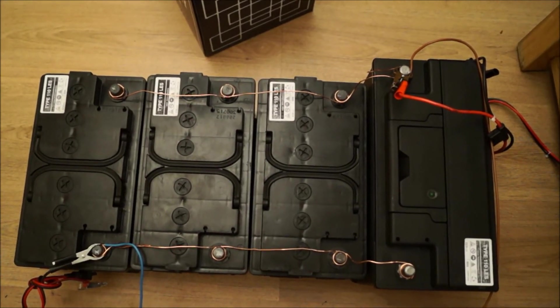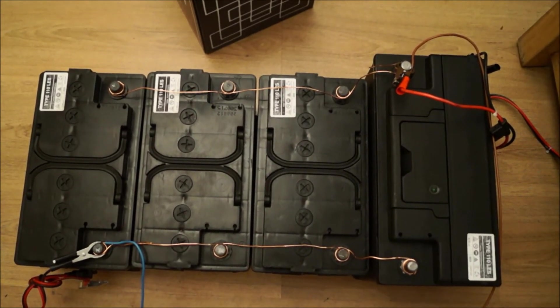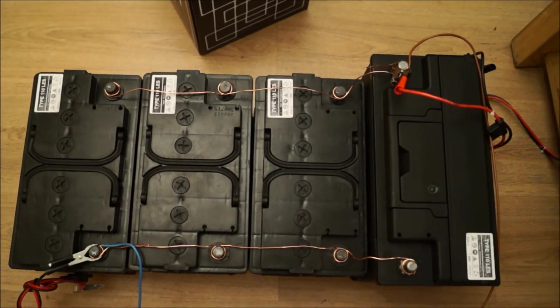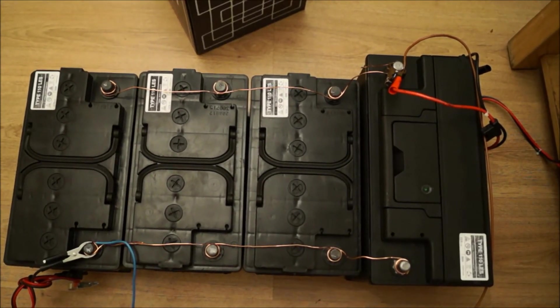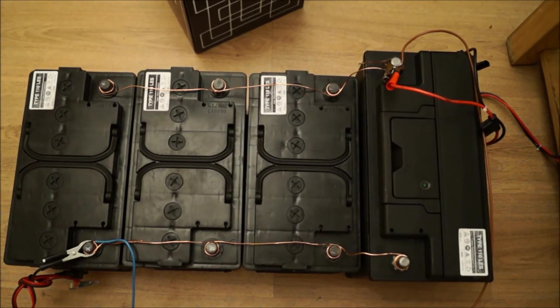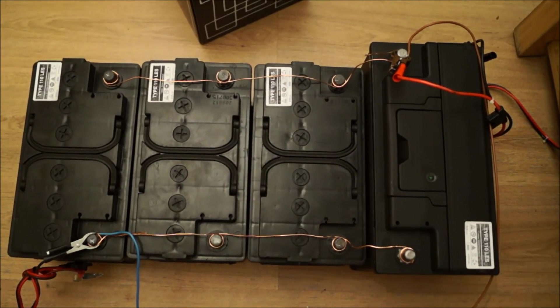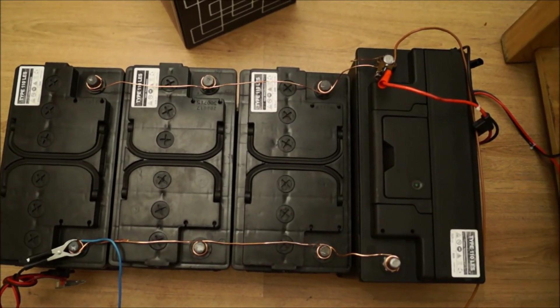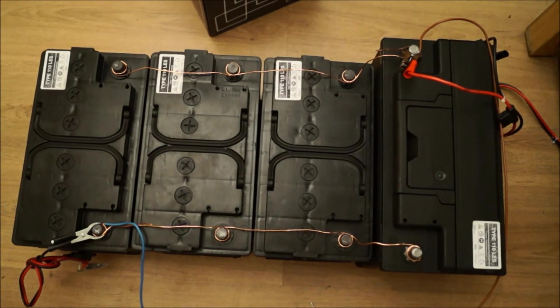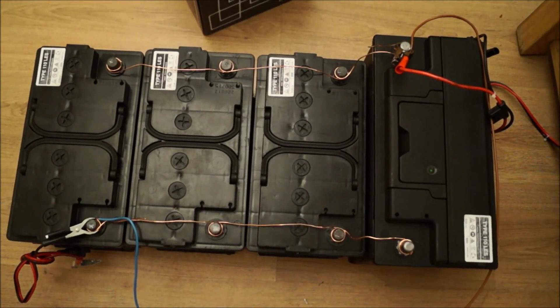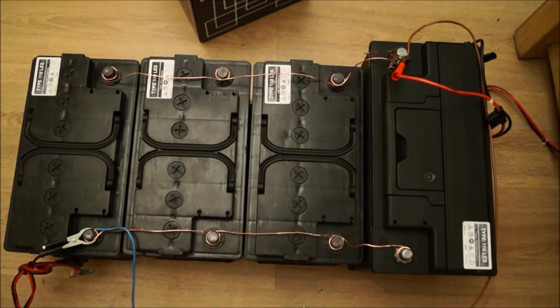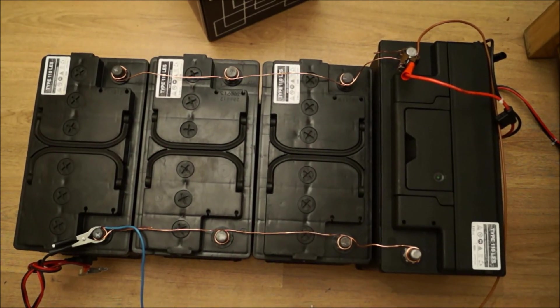If I connected them all in something that's called series, which is daisy chaining them where the negative is connected to the next battery's positive, you ramp up the voltage. So these four batteries would produce a total of 48 volts, but the amp hours will still stay at 110 because you can't create power out of nothing.